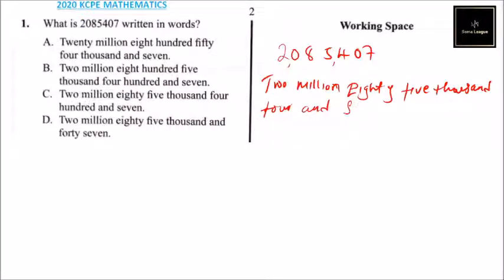That's how you write that number. Once you write it like that, check from the options provided. Two million eight hundred - that is not correct. It is not 800 but 85,000. So we have two million eighty-five thousand four hundred and seven - that's correct.